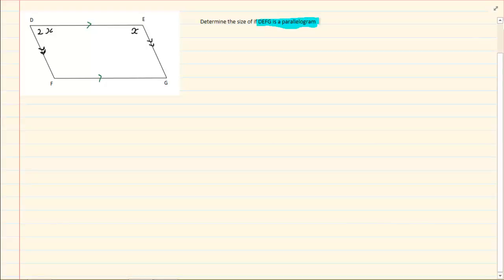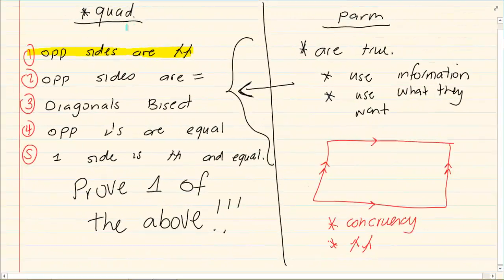Then it means that any fact that you know that is linked to a parallelogram you can immediately put it in. So in this case what do we know? You know that the opposite sides are parallel, you know that the opposite sides are equal, you don't have diagonals in that graph so you're not going to use this rule. You know that the opposite angles are equal, one side is equal and parallel. These are all rules you know of a parallelogram.